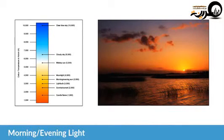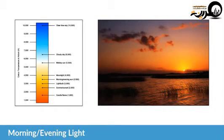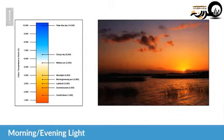Morning sun has a similar Kelvin range - around 2,500 Kelvins - and produces strong oranges in the image. We can see that very clearly in the clouds, which are generally a light gray. This is what we'd consider a positive effect of white balance, giving a rich, warm glow. Students often ask how to get deeper oranges in sunset photographs, and changing your white balance is one way to do that.